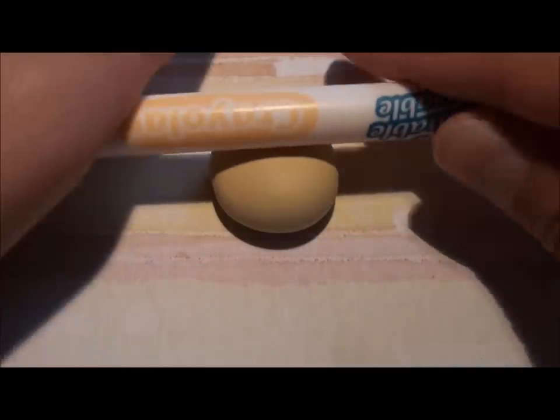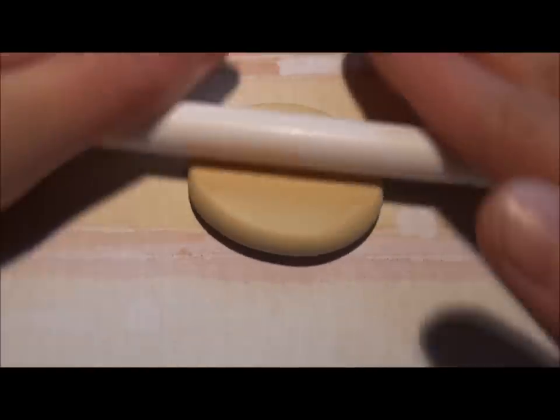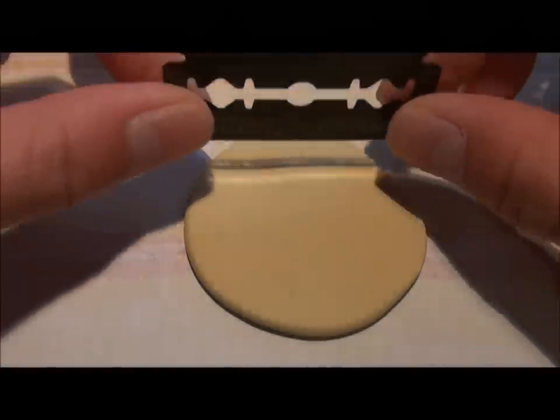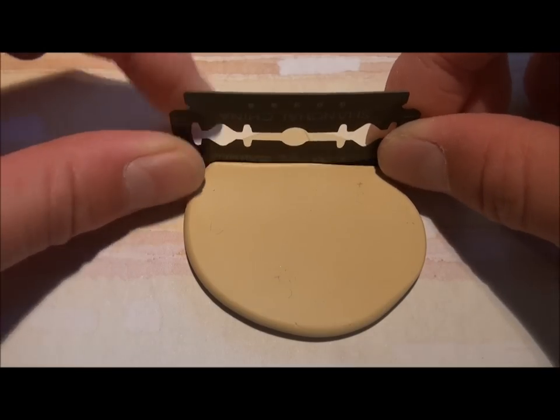So flatten it out and roll it out using a rolling pin. Then take a blade and cut a square shape.